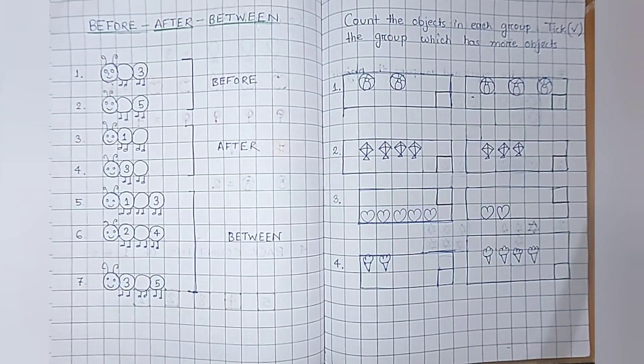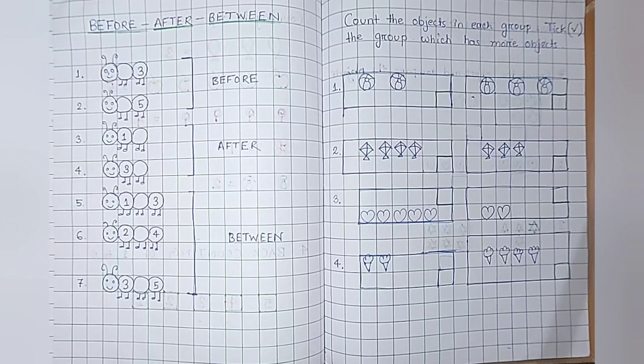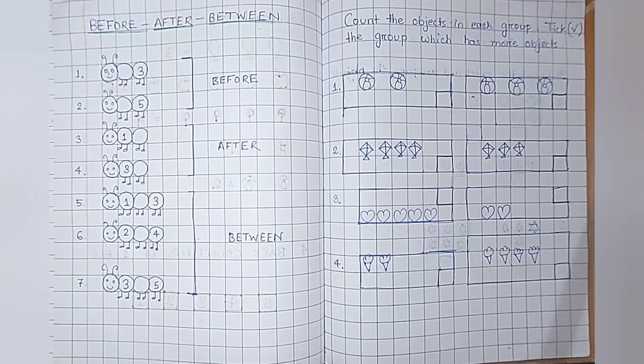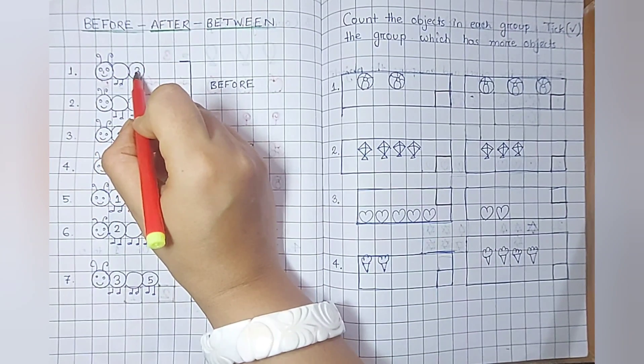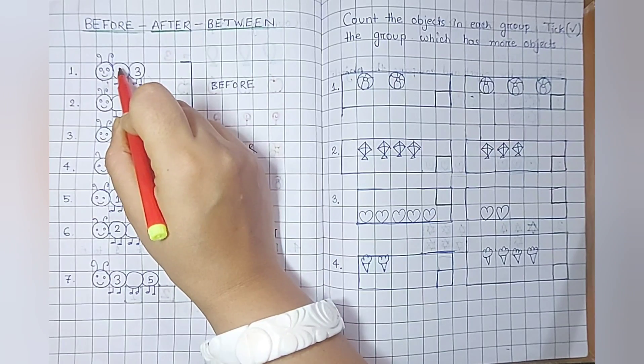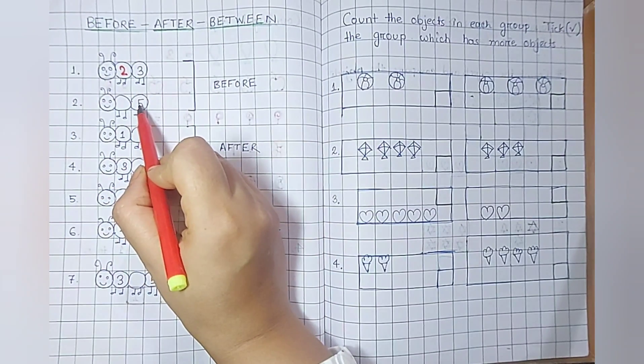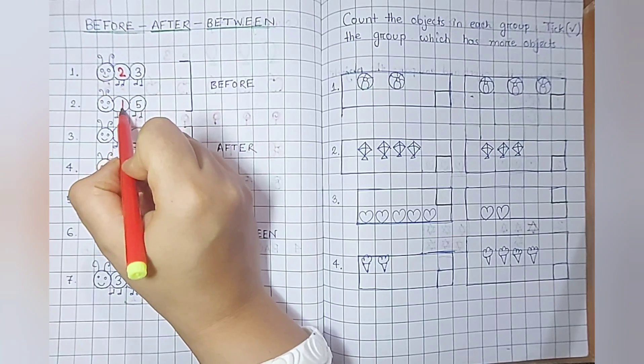This question is about before, after, and between. Students have to know before numbers, after numbers, and between. This one is three. And the before number is what? Before number is two. Next, five is here. Before number is four.